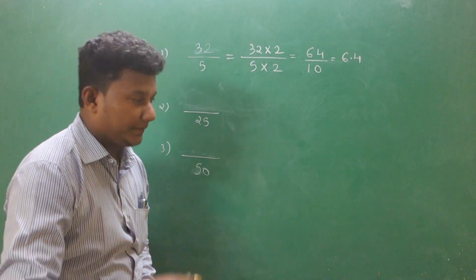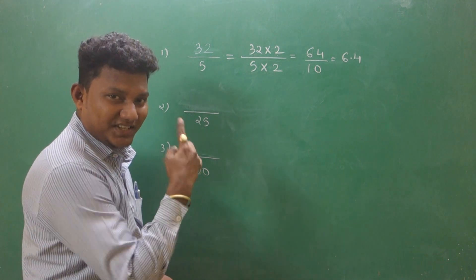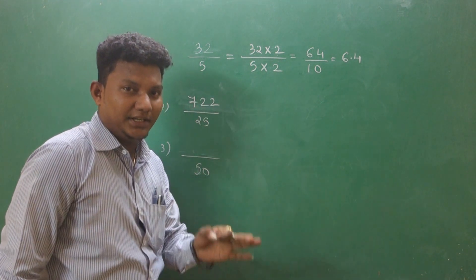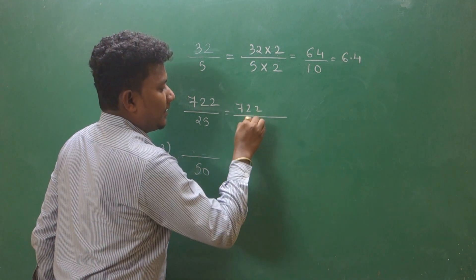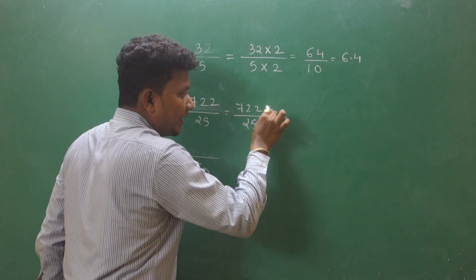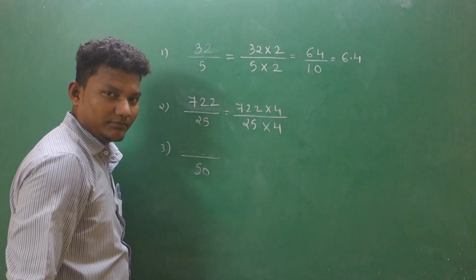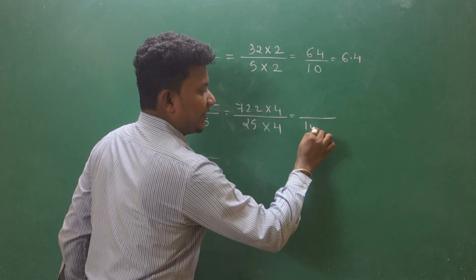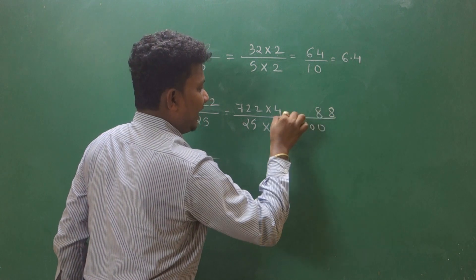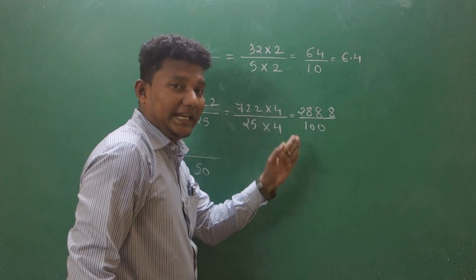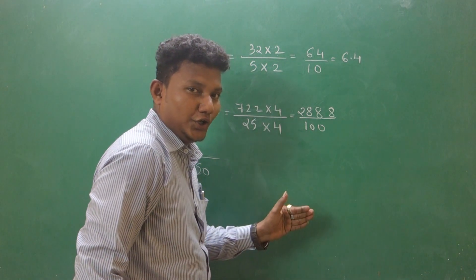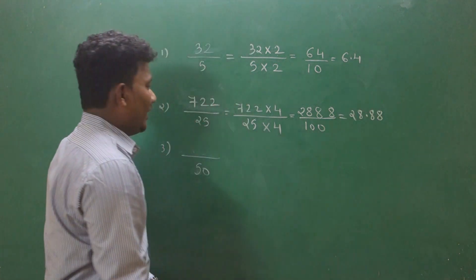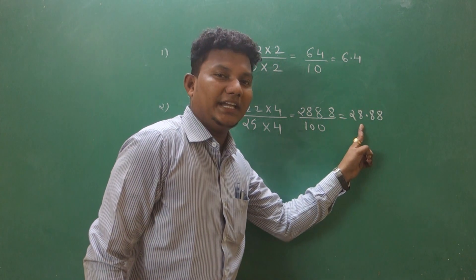Whenever you have to divide any number with 25, let's take the example of 722 divided by 25. Simply multiply the numerator with 4 and the denominator with 4. So 25 times 4 is 100, and 722 times 4 is 2888. So you get 2888 divided by 100. Whenever you divide by 100, you will get the answer 28.88. So 722 divided by 25 equals 28.88.